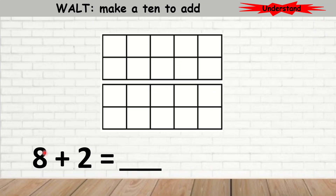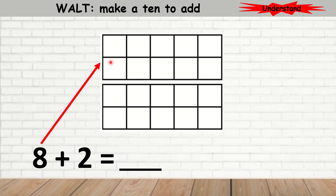Here I have 8 plus 2, and I have two 10-frames that are going to help me to add these two numbers together. The first number I have is 8, so I'm going to draw 8 circles.